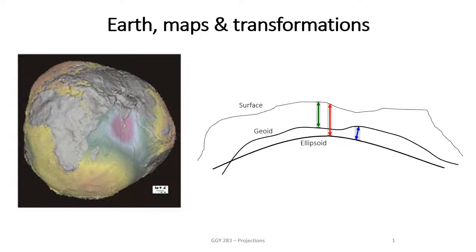It's irregular, it's got some bumps and elevated areas. It's actually more flattened north to south than it is east to west, due to the rotation of the earth along its axis. So it is not a true sphere — it's not really round.